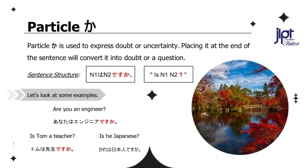Particle ka. Particle ka is used to express doubt or uncertainty. Placing it at the end of the sentence will convert it into a question: N1 wa N2 desu ka — meaning 'Is N1 N2?' When you want to ask a question, simply put the particle ka at the end of the sentence. Let's look at some examples. Are you an engineer? Anata wa enjinia desu ka?